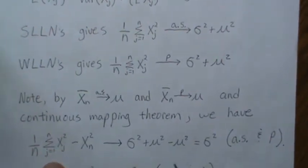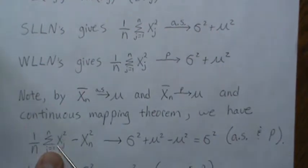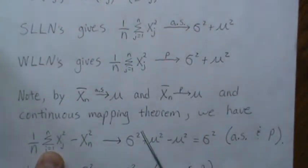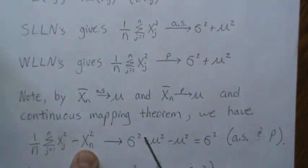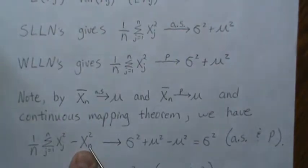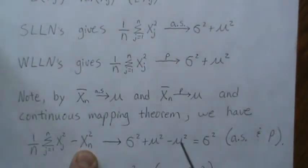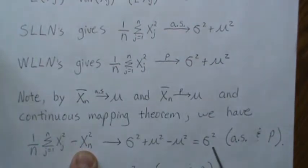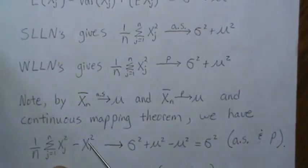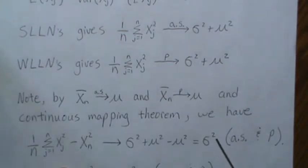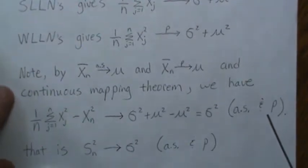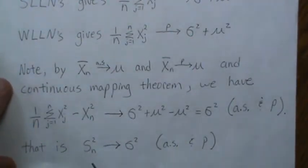By the strong law of large numbers X̄ converges to μ, and by the continuous mapping theorem X̄² converges to μ². So the first piece converges by the law of large numbers, and the continuous mapping theorem gives us X̄² → μ². The μ² terms cancel, leaving σ². So the sample variance, not adjusted for bias, converges to σ² — the population variance — almost surely and in probability.